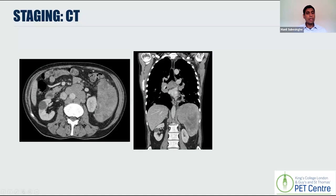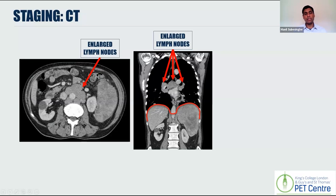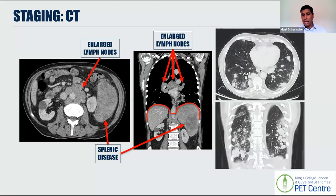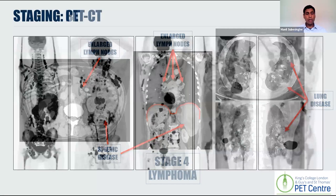Here's an example of a CT scan used for staging. We've outlined the diaphragm, and you can see the kidneys just here. There are enlarged lymph nodes at the level of the kidneys, which are beneath the diaphragm, and there are enlarged nodes above the diaphragm within the chest. So we are already dealing with stage three lymphoma. You can also see that the spleen is abnormal — it's enlarged, and there are dark areas of gray in keeping with lymphoma. If we look at the lungs, which generally should be black, there are white nodules which are also sites of lymphoma. So this is a person with stage four lymphoma.